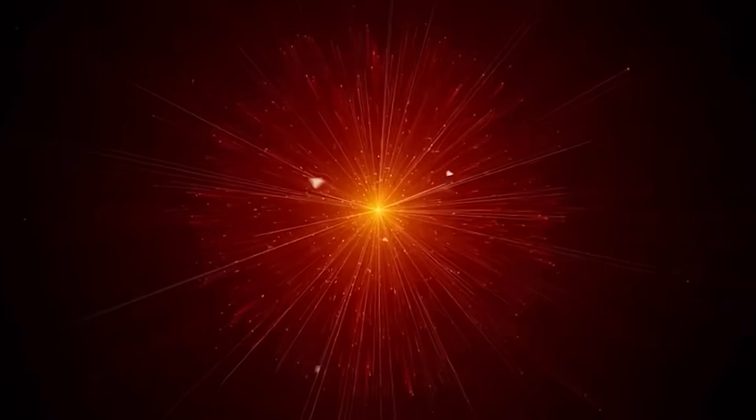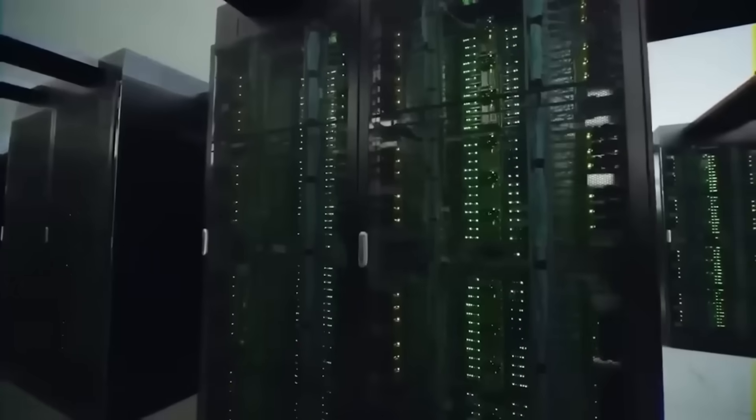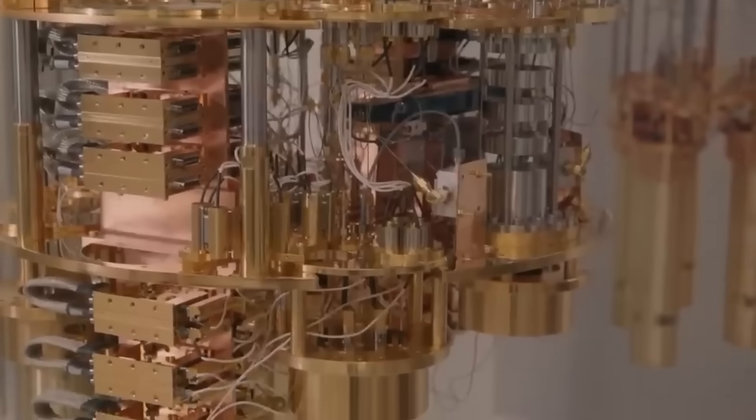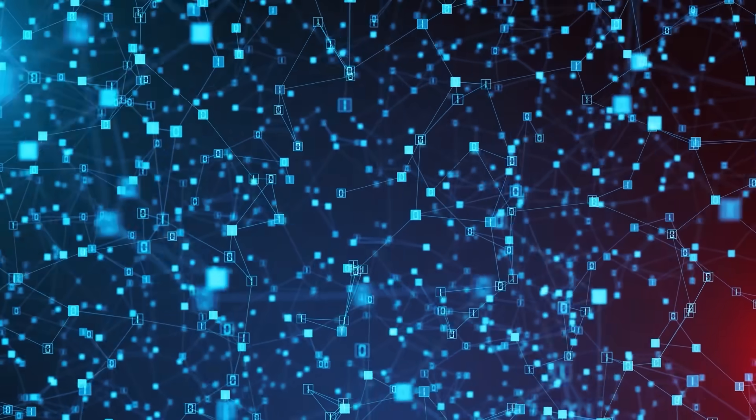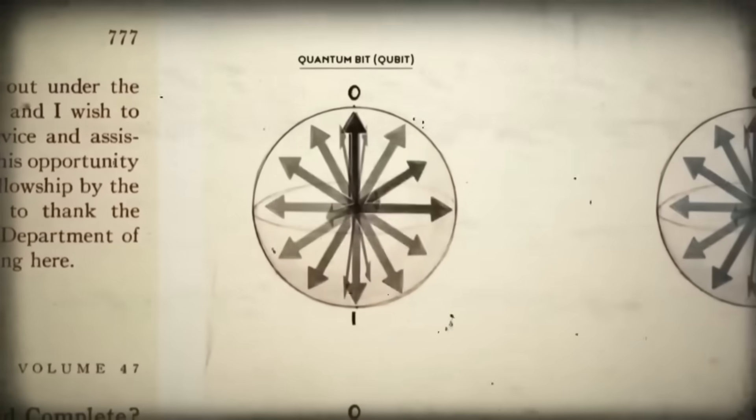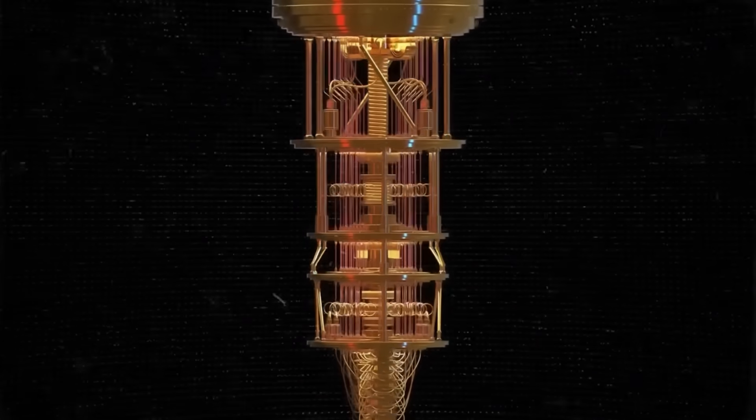The Groundbreaking Experiment: So how did scientists observe negative time? The answer lies in the bizarre world of quantum mechanics. Researchers at a leading quantum computing laboratory set up an experiment using IBM's quantum processor. Quantum computers work by using qubits, which can exist in a superposition of both states at the same time. The scientists created a simple quantum system and observed how it evolved over time.